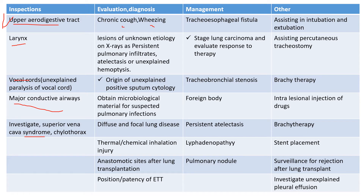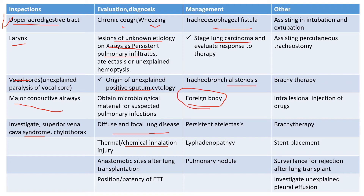For evaluation and diagnosis, bronchoscopy is used when a person presents with chronic cough, an x-ray showing unknown etiology, persistent infiltrates, positive sputum cytology, diffuse focal lung disease, or thermal and chemical inhalation injury. It is also used for management of tracheoesophageal fistula and staging of lung carcinoma, as well as removal of foreign bodies.